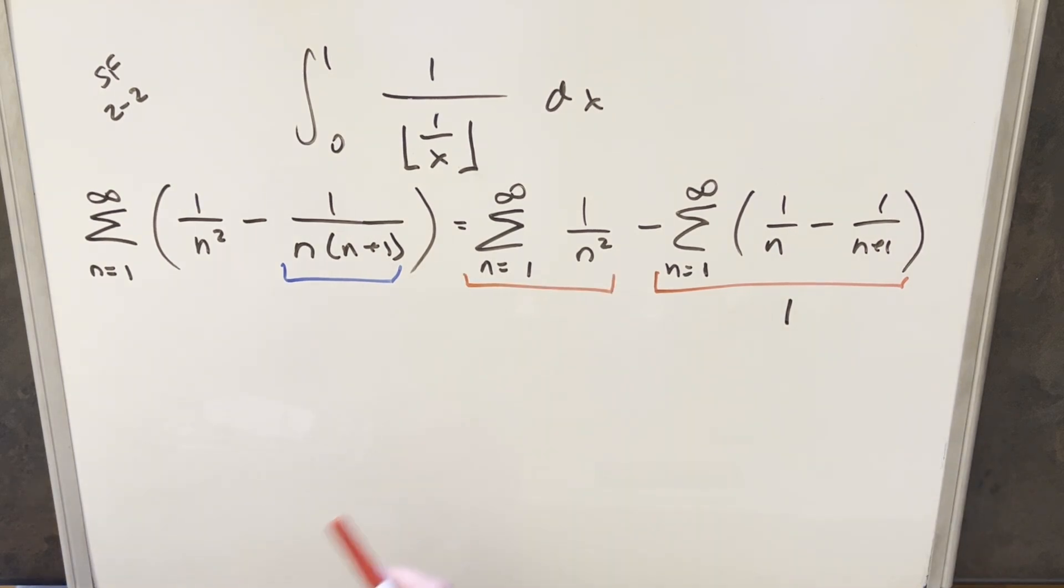Next, we'll look at this first series here, but this is actually a really well known series. This is called the Basel problem, and we have a known value for this. The value for this series is actually just going to be pi squared over 6. Just by memorizing this value right here, we can write down our final solution. It's just going to be pi squared over 6 minus 1.